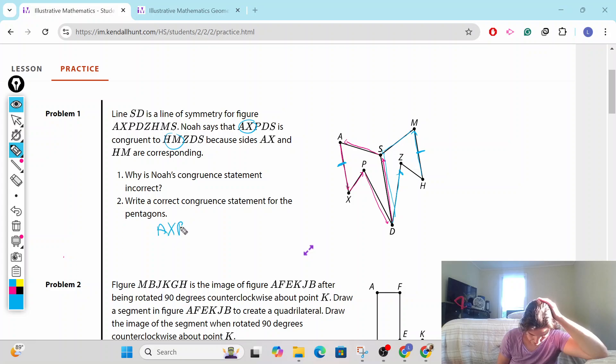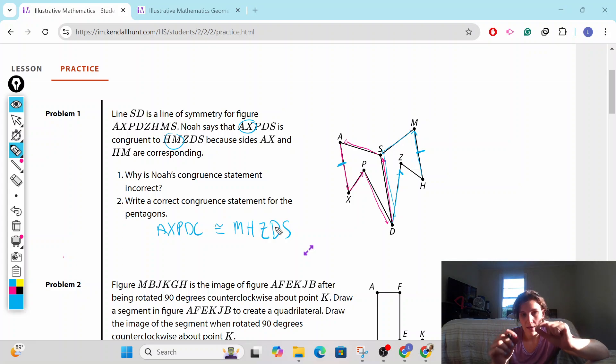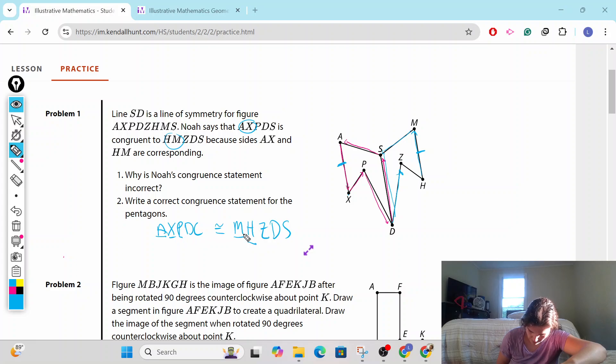So with what Noah said, A, X, P, D, S, that's good. He went A, X, P. It kind of went down and then up. So this would have to be M, H, Z. That same down and up is congruent to M, H, Z. So when you have shapes, the way you write them out, or the figures, each vertex, so the A which is here, has to correspond to the corresponding vertex. So the A corresponds to the M, the X corresponds to the H, the P corresponds to the Z, the D corresponds to the D because they're in the same spot, and the S should correspond to the S.